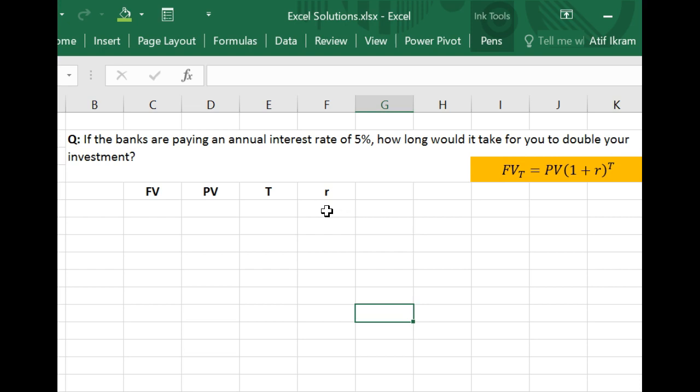Now it is probably helpful for starters to see what are the inputs that are given to you and what is being asked for. And so in this case, you're being told that the annual interest rate is 5%, so the value of R is 5%. And you're being told that you are interested in doubling your investment.